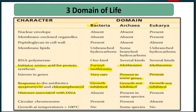Next character: histone proteins associated with DNA. Histone proteins help in DNA packaging. In Eubacteria, histones are absent. In Archaebacteria, some species have histones present, but not all. In Eukaryotes, histone proteins are present. Next: chromosome structure. In bacteria and Archaebacteria, chromosomes are circular. In Eukaryotes, circular chromosomes are absent.